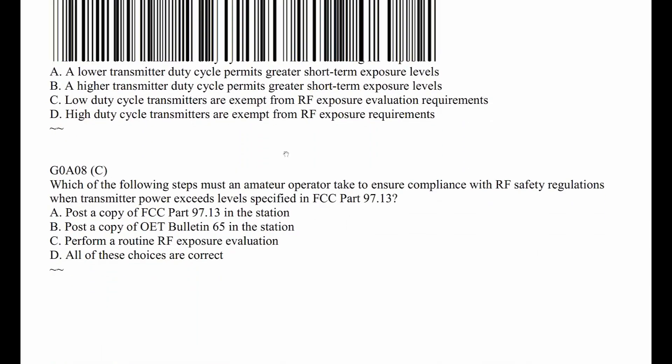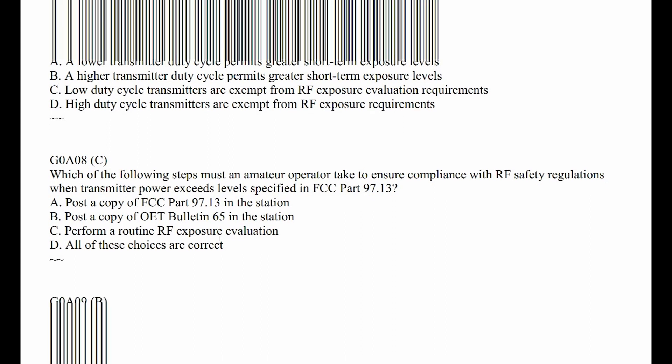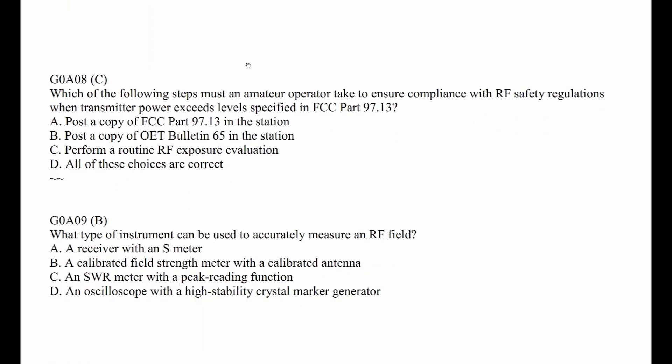G0A08: Which of the following steps must an amateur operator take to ensure compliance with FCC regulations when transmitter power exceeds levels specified in FCC Part 97.13? The answer is C: perform a routine RF exposure evaluation. Posting a copy probably wouldn't help any.